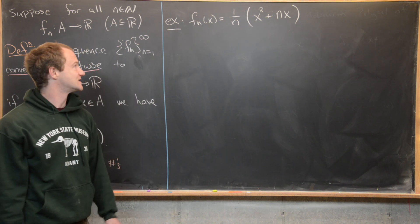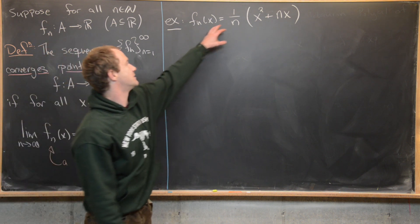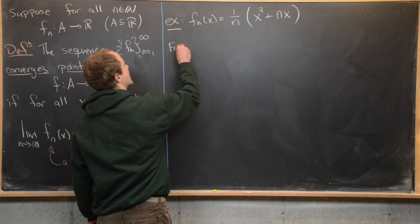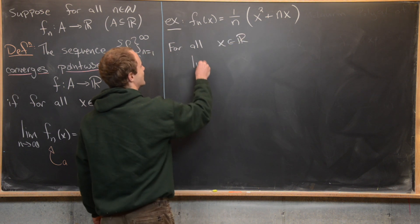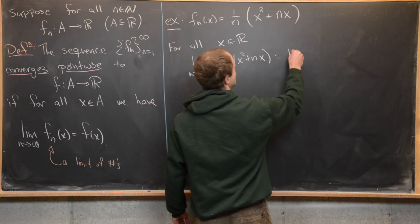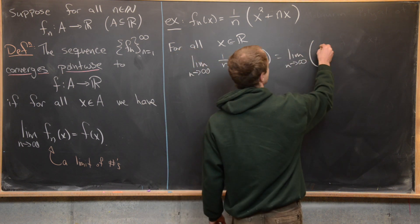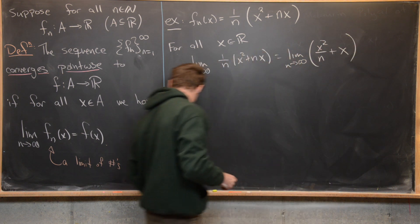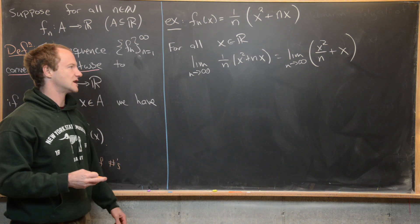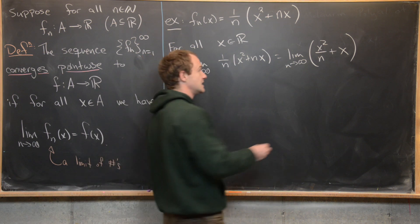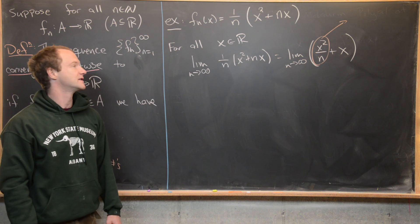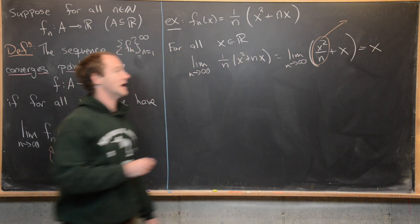For our first new example, we look at the sequence of functions f_n defined by f_n(x) = (x² + nx)/n. For all x in the real numbers, the limit as n goes to infinity of (x² + nx)/n equals the limit as n goes to infinity of x²/n + x. Since x² is a fixed real number, x²/n goes to 0, and so we get that this limit is just x.